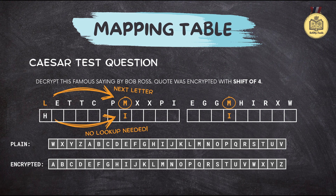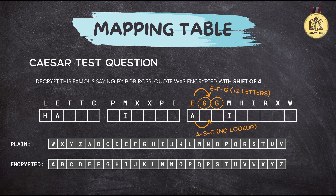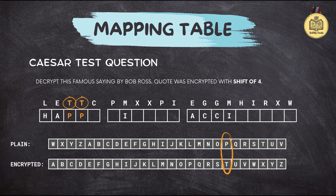That shortcut can save you precious seconds during competitions. Next up we have E, which according to our table maps to A. After that we have G — remembering our shortcut, G is two letters after E, and we know E decodes to A, so G must decode to C. Then we come to T, which using our table we see maps to P. It's like a puzzle — the more you decode, the easier it becomes to predict the plain text.